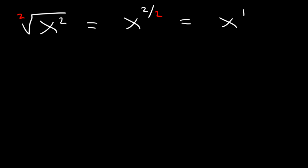It turns out that the answer is really the absolute value of x. Any time you take the square root, or a root with an even index number, and you get an odd exponent, you need to use an absolute value symbol. If you don't have an even index number, you don't have to use it.